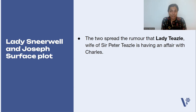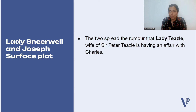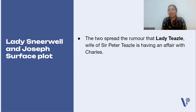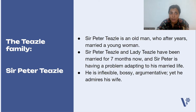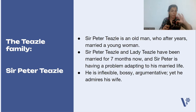There is a problem though — Joseph wants to marry Maria, and does not want Charles to get Maria. Lady Sneerwell also wants Charles for herself. So Lady Sneerwell and Joseph, who are very good gossip mongers and plotters, spread the rumor that Lady Teasel — the young, beautiful wife of Sir Peter Teasel — is having an affair with Charles.